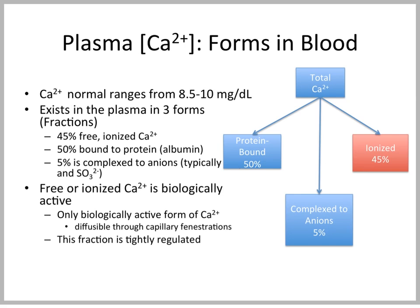As we mentioned, calcium is tightly regulated within the body, but it's important to recognize that what is regulated is the ionized version of calcium, because calcium exists in three different forms: protein bound — largely bound to albumin — that which is complexed to anions, and leaving about 45%, which is the biologically active form. This ionized fraction is relatively diffusable through capillaries and is the fraction that's tightly regulated.